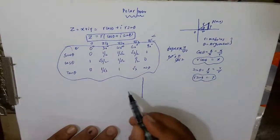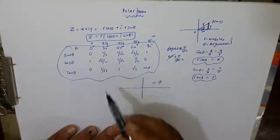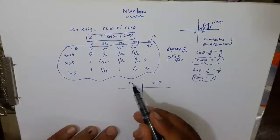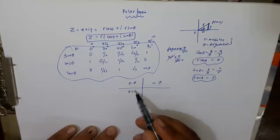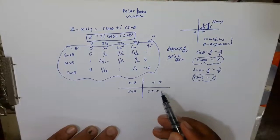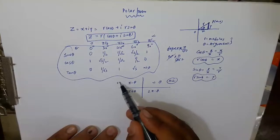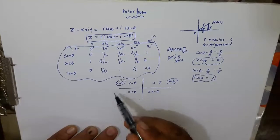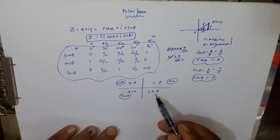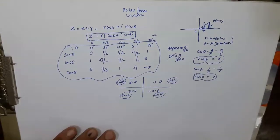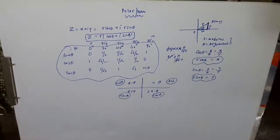Dusri cheez ki agar koi angle yahan aa raha hai, toh usko direct table se dekhenge. Koi angle yahan aa raha hai, toh usko hum pi mein se minus karenge. Principal values we can say that yahan pe aa raha hai toh pi plus theta or yahan aa raha hai toh 2 pi minus theta. And we know that in this quadrant, all trigonometric ratios are positive. Here sine and its reciprocal cosec is positive. Here tan theta is positive and its reciprocal cot is positive. Or yahan pe cos theta and its reciprocal sec theta positive hota hai. Toh ye basic concepts aapko pata hone chahiye, tabhi aage questions kar payenge easily.